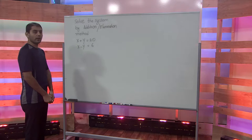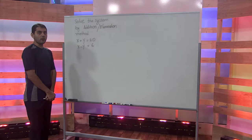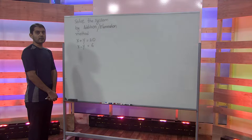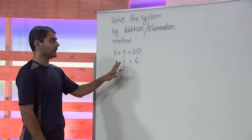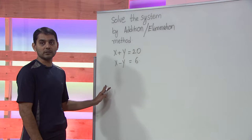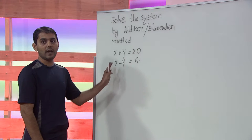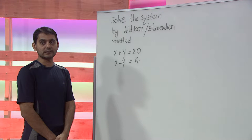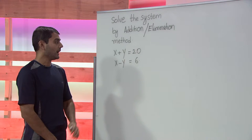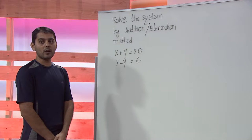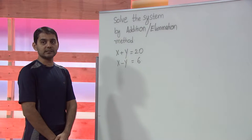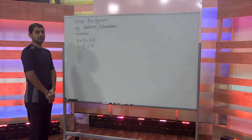To begin with, we want to write the equations in standard form — meaning we want to isolate the variables on the left side and numbers on the right side. In this example, the system is already in standard form.